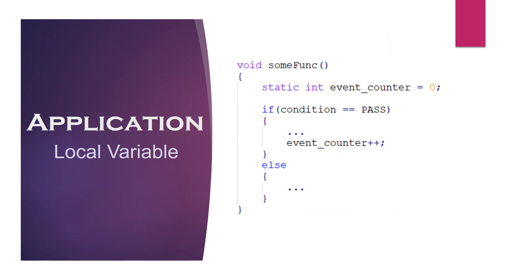Another major application of a static variable can be found as an event counter, which will count positive or negative events across multiple function calls.